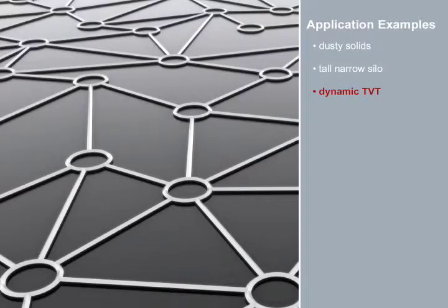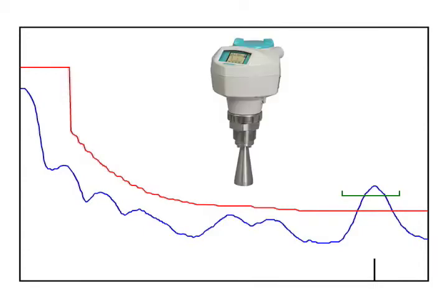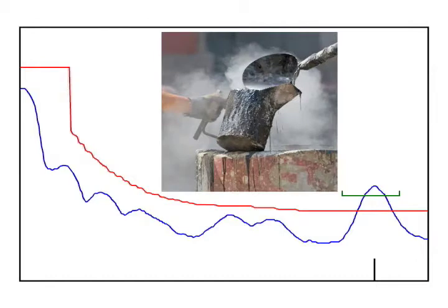Application 3 Dynamic TVT. This echo profile is from a Siemens LR250 monitoring a bitumen application. Bitumen is a heavy, sticky, black petroleum product that must be heated in order for it to flow.